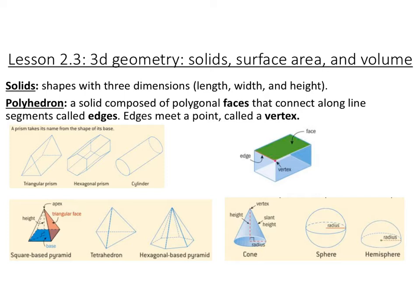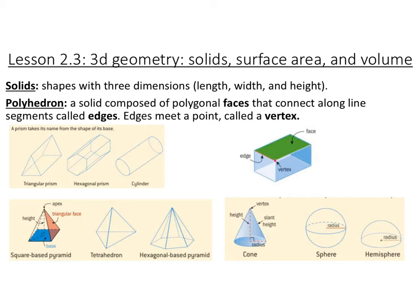Another common type is pyramids. Pyramids take the name of whatever the base is. A square-based pyramid has all faces meeting at one apex, and you can find the height from the apex down to the base. A tetrahedron is the same thing as a triangular-based pyramid. A circular-based pyramid is a cone. We also have a sphere and a half-sphere, which we call a hemisphere.